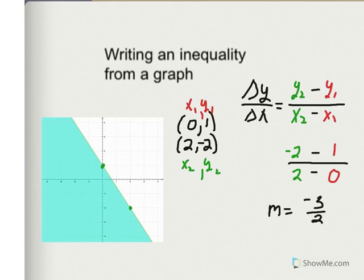Doing my calculations, I get the slope is negative 3 halves. I can tell from the graph my y-intercept is (0, 1). Therefore, my equation of my line is y equals negative 3 halves x plus 1.